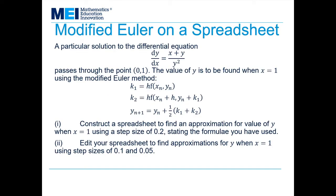Here's an example of a question we might want to ask. We've been given dy/dx equals (x+y)/(y²). We're told that the particular solution passes through the point (0,1), so this is where we start our approximation from. The value of y is to be found when x equals 1 using the modified Euler method.